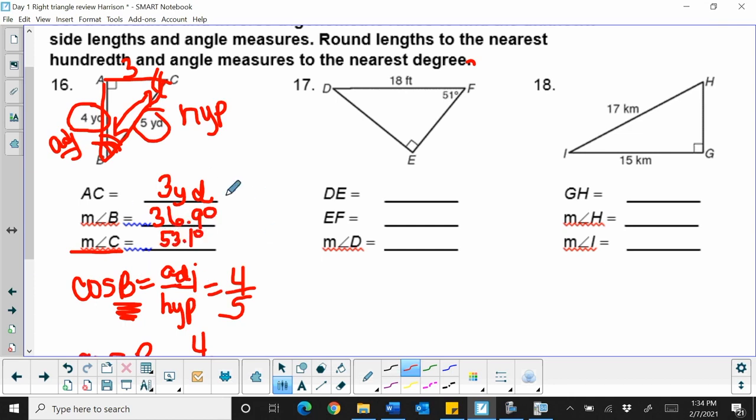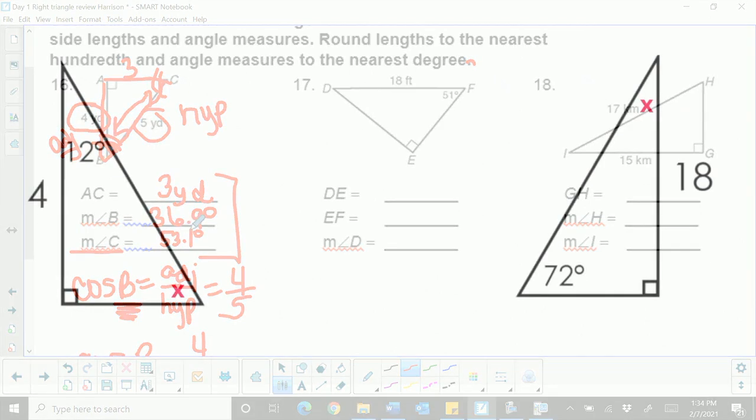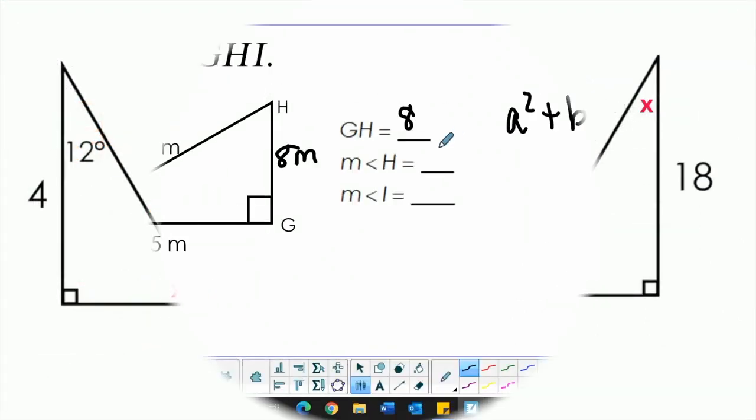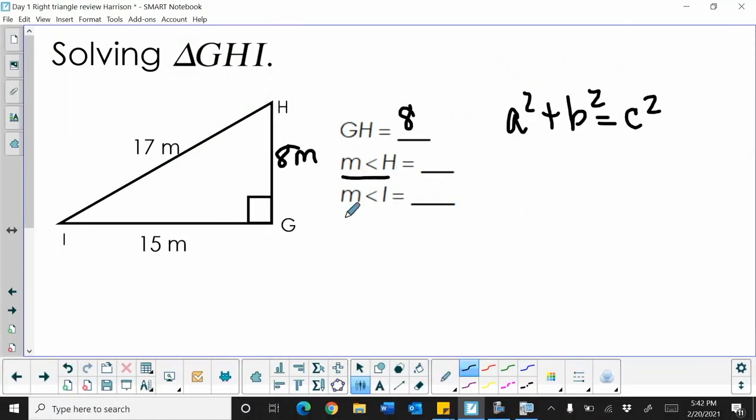So there we go. So I have found those two, or one side, and the two angles. Now, let's go through and look for our two missing angles. Okay, these are the backwards problems.